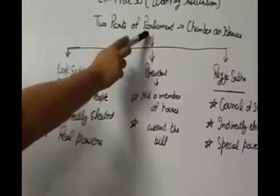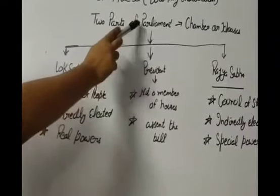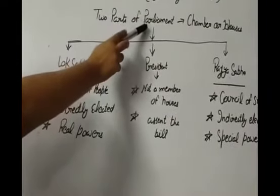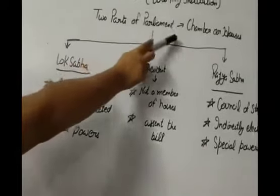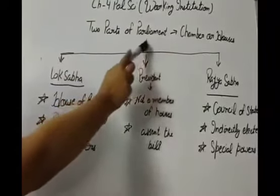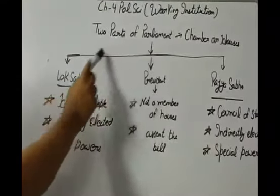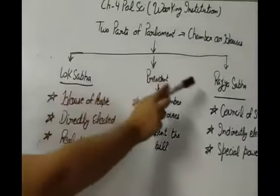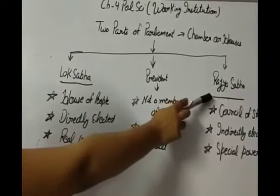Parliament is the supreme lawmaking body of India. In large countries, the Parliament has two parts, the chambers or the houses. In our country, the Parliament is also divided into two houses: the lower house means Lok Sabha and the upper house means the Rajya Sabha.